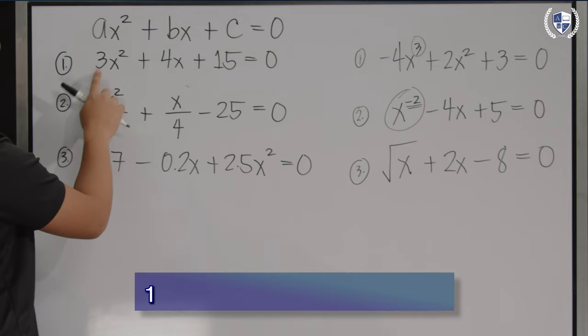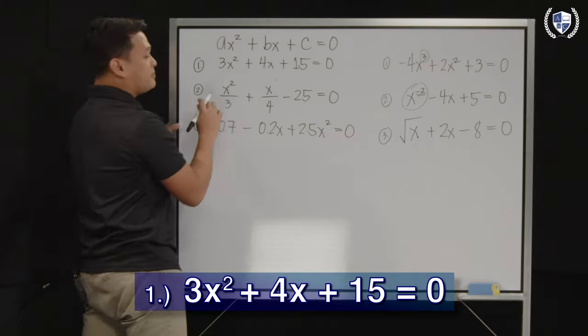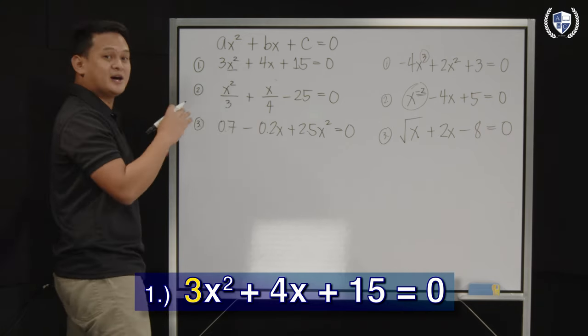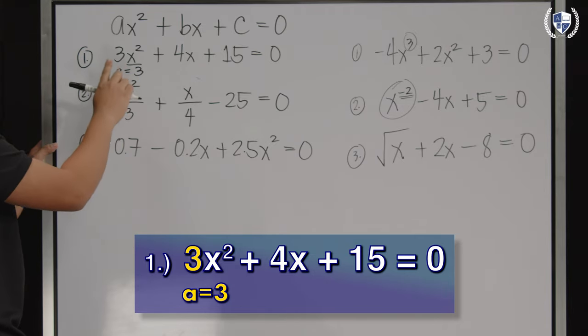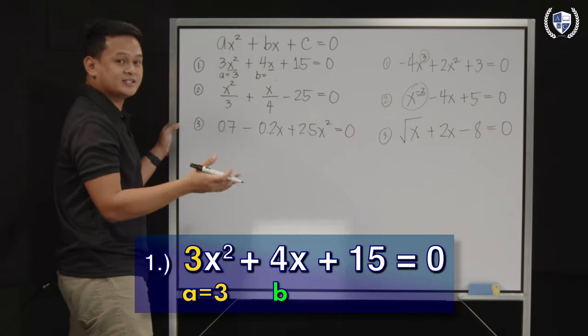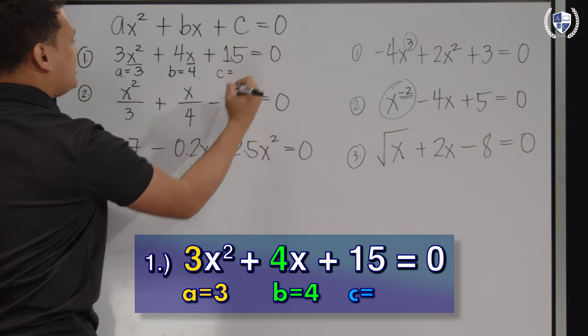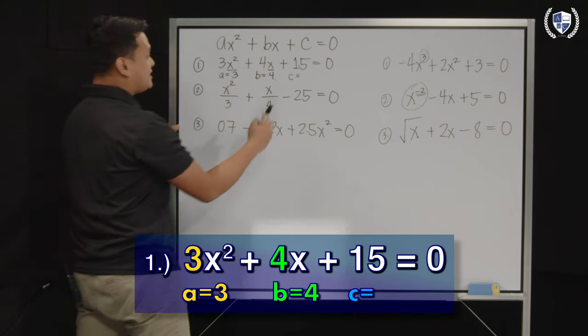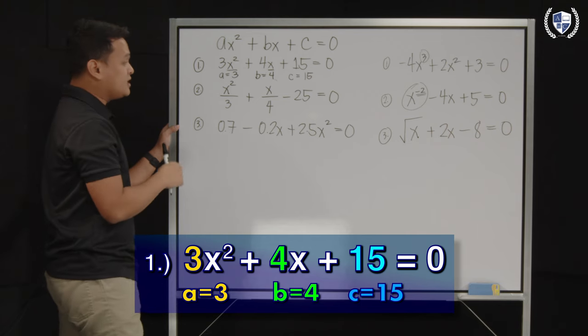So, for our first example, we have 3x² + 4x + 15 = 0. How do we get the values of a, b, and c? a is just the numerical coefficient of the term x². So, when we say numerical coefficient, that's the number next to it. And here, in this example, a is actually positive 3, because that 3 is next to our x². And for your b, b is actually the numerical coefficient of our term x. So, if you see an x there, the value of b is the number next to it, which is positive 4. As for your c, c is actually the lone number, or our constant term, that doesn't have x² or even x next to it. And in this case, it is positive 15. So, for number 1, the values of a, b, and c are positive 3, 4, and 15 respectively.